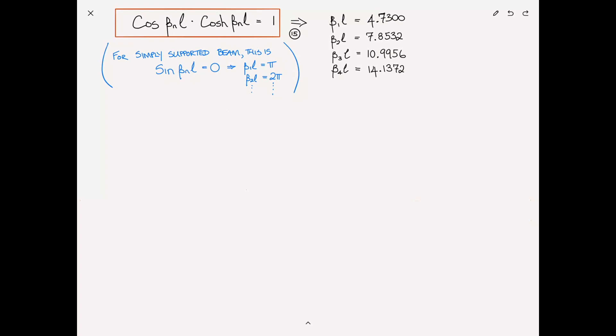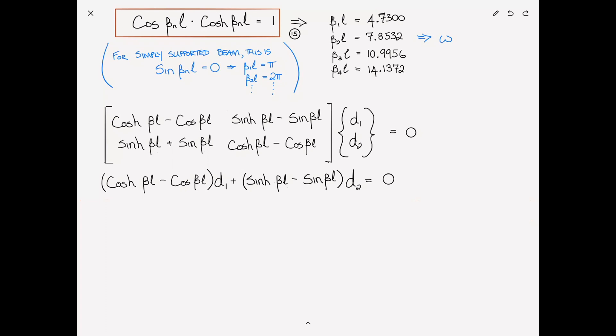And then from the βs, obviously, we can calculate the ωs. βs and ωs can be thought of both to be frequencies. So in order to find the mode shape, we go back to our original system of equations. This is equal to zero. And now, because the determinant of this matrix is equal to zero, in effect, the top equation and the second equation are the same. They're just multiples of one another. Doesn't matter which one we pick, we'll pick the top one. The top equation reads (cosh βL - cosine βL) times d1 plus (sinh βL - sin βL) times d2 = 0.